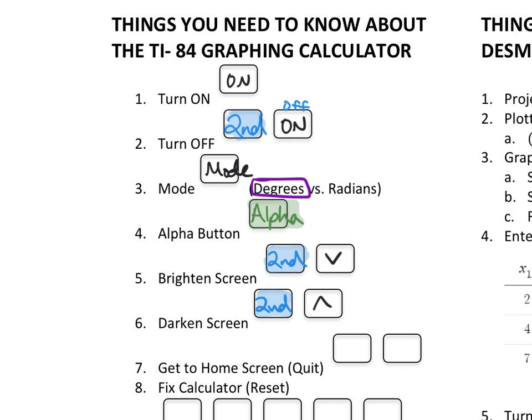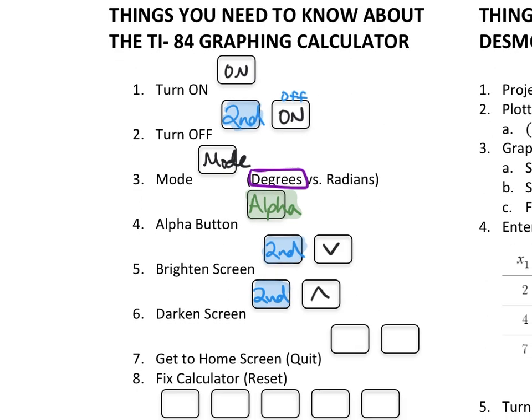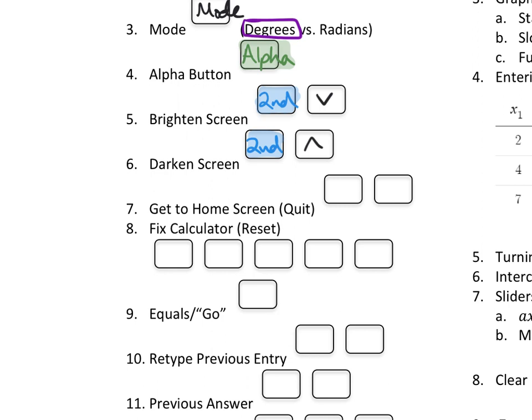Now, we're going to call the home screen the screen where you can type in numbers with nothing else on it. If you're ever in a menu and you want to go back to the home screen, you're going to want to quit. Does anybody see the word quit on their calculator somewhere? Yeah, it's above what button? Mode. So we know we're going to have to press the mode button, but since that word quit is blue and it is above the word mode, what do we press before mode? Second. So that's one super important. So let's put a little star next to this guy. If we ever are like on a menu that we want to get out of, we press second mode to quit and go back to the home screen.